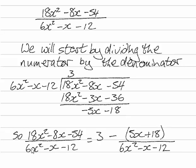So that means 6x squared minus x minus 12 divides into 18x squared minus 8x minus 54 three times with a remainder of minus 5x minus 18. I've just taken the minus sign outside of the 5x and the 18.